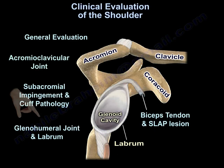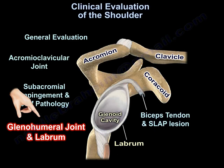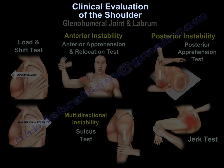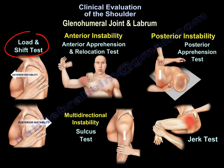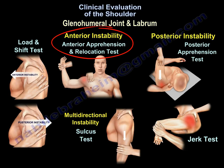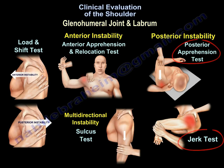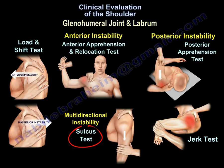For the glenohumeral joint and labrum, we use the load shift test for instability, the anterior apprehension test for anterior instability, the posterior apprehension test and jerk test for posterior instability, and the sulcus test for multi-directional instability.